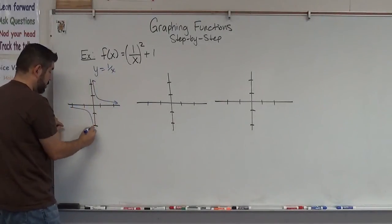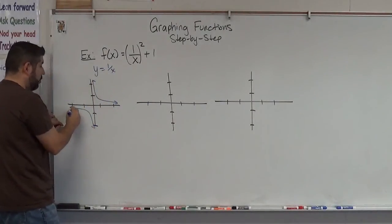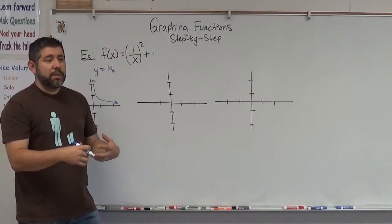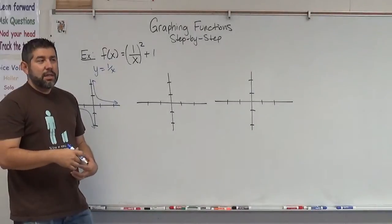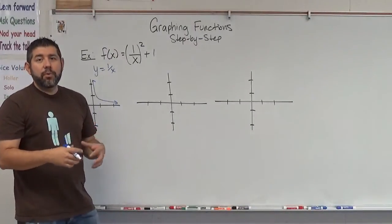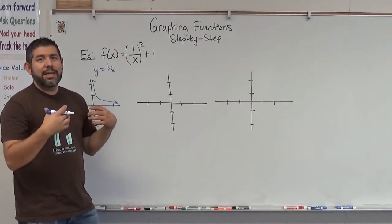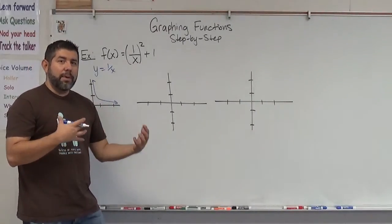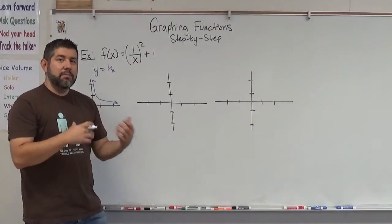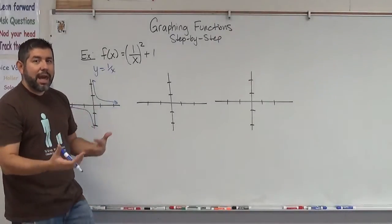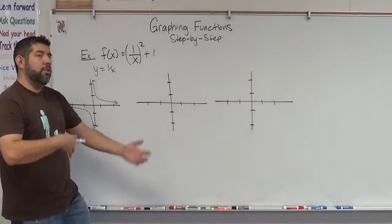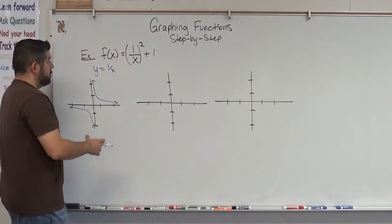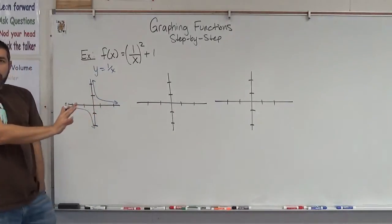It looks like this. These might not be perfect graphs — to get them pretty exact we'd need to plug in a few points. But we're just getting an idea of what these graphs look like so that we can talk about analyzing them, look at their max and mins, their increase and decrease, and their concavity. So we've got our graph of 1 over x.